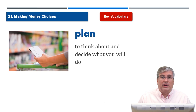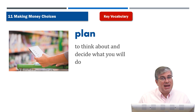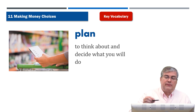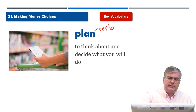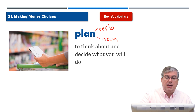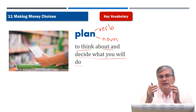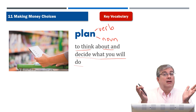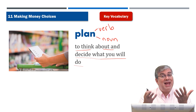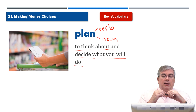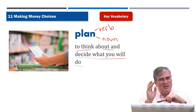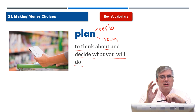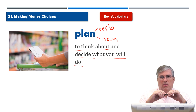The first word in our vocabulary section is 'plan.' It's very important to plan ahead, to make a plan. You can use it as a verb — it's more commonly used as a verb, but it can also be a noun in formal situations. Plan means to think about and decide what you will do. Let's plan something for the weekend. Let's plan for our future. Do you have any plans for tomorrow? That's the noun form.